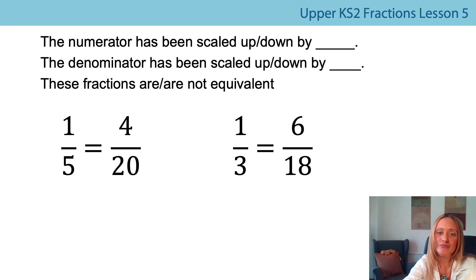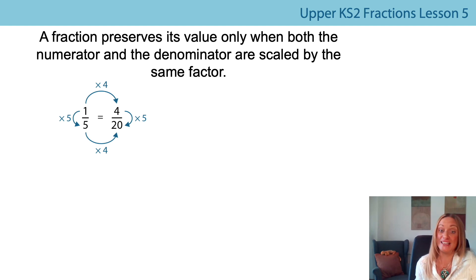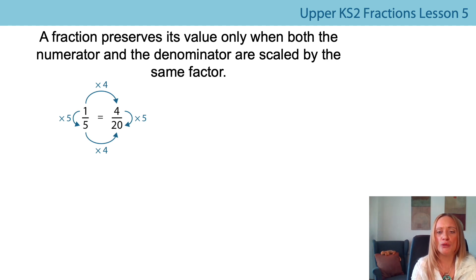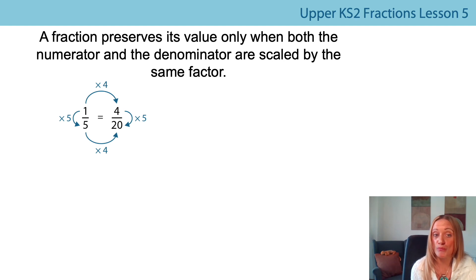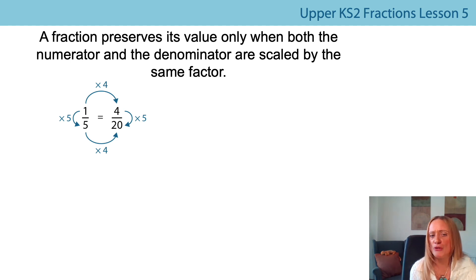Fantastic. I've got the same example here with a bar model now, showing the vertical and horizontal multiplicative relationships. And I've got this generalisation: a fraction preserves its value only when both the numerator and denominator are scaled up by the same factor. What does it mean to preserve something? It needs to keep it the same. So a fraction keeps its equivalent value only when both the numerator and denominator are scaled by the same factor. Could you draw a bar to help you visualise those equivalent fractions? Pause now and see if you can draw a bar that shows them.